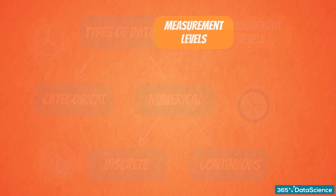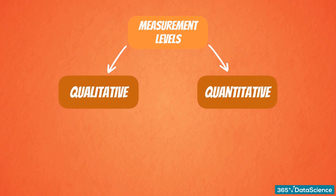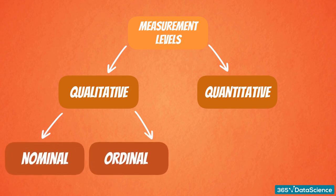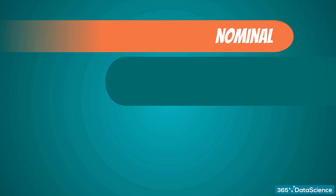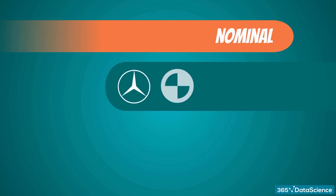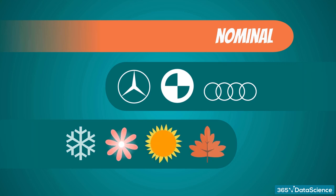Levels of measurement can be split into two groups: qualitative and quantitative data. Qualitative data can be nominal or ordinal. Nominal variables are like the categories we talked about just now — Mercedes, BMW, or Audi, or like the four seasons: winter, spring, summer, and autumn. They aren't numbers and cannot be ordered.